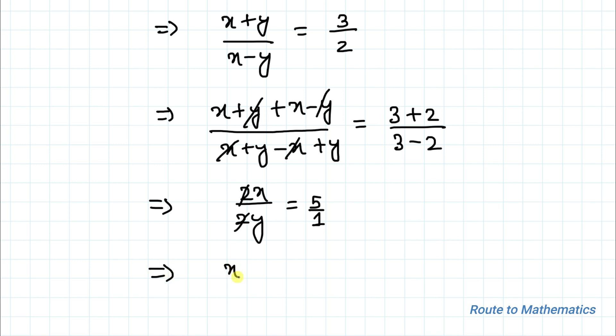So 2 here gets cancelled out, so we have x/y equals 5/1 as our answer. I hope you have understood the solution. Thanks for watching, please subscribe to my channel and hit the like button for more such interesting videos. Thank you.